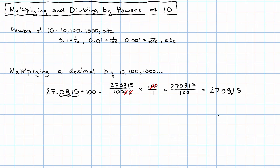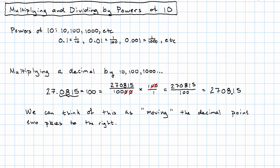You're probably looking at this and saying there has to be an easier way to do that — and there definitely is. We can think of this as moving the decimal point two places to the right. So we started with 27.0815; here's the decimal point, move it one, two places, and the result is 2708 before the decimal point, then .15.